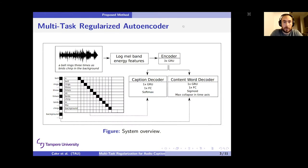If you go to our proposed method, we call it multi-task regularized autoencoder. On the upper left corner, you'll see an audio waveform and its target caption, a bell rings three times as birds chirp in the background. In our proposed method, we would first be conducting feature extraction. We'd extract log-melband energy features and we would employ an autoencoder scheme with two different decoders and single encoder. In our caption decoder, we would have a target output matrix for each recording that we have.